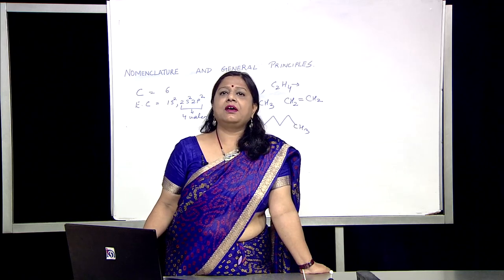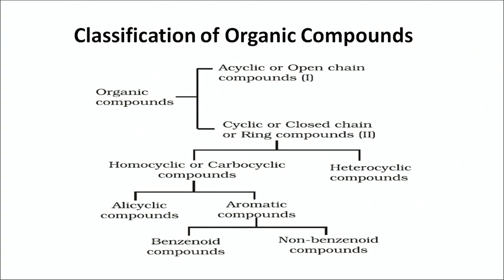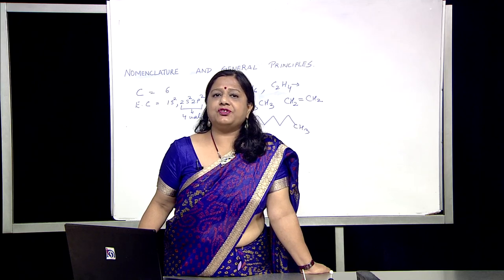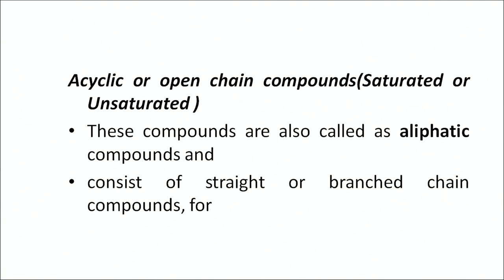Now let us classify organic compounds. Organic compounds can be classified into acyclic or open-chain compounds and cyclic or closed-chain or ring compounds. Cyclic compounds can be further classified into homocyclic or carbocyclic compounds and heterocyclic compounds. Homocyclic compounds can further be classified into alicyclic compounds and aromatic compounds. Aromatic compounds can be further classified into benzenoid and non-benzenoid compounds. Acyclic or open-chain compounds can be saturated or unsaturated; they are also called aliphatic compounds, and consist of straight or branched-chain compounds.